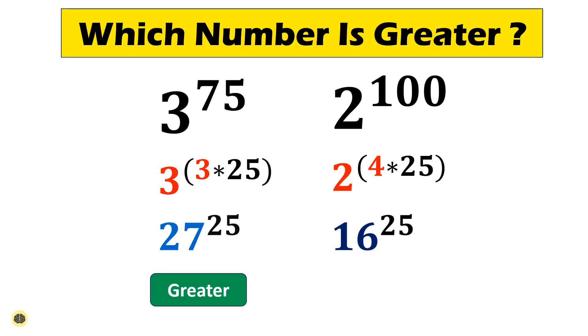It's essential to recognize that 27 (that is 3 power 3) is larger than 16 (that is 2 power 4), and when raised to the power of 25, this disparity becomes even more pronounced. Therefore, the answer to our initial question is that 27 power 25 is the larger number, thus 3 power 75 is greater than 2 power 100.